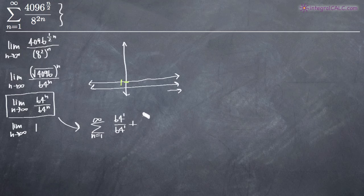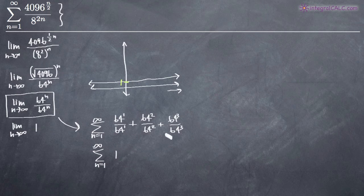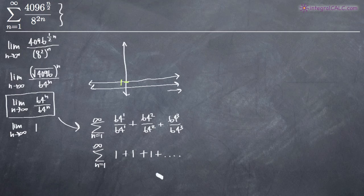When we plug in n equals 2, we get 64 squared over 64 squared. When we plug in 3, we get 64 cubed over 64 cubed. Each term equals 1: 64 to the first over 64 to the first is 1, 64 squared over 64 squared is 1, 64 cubed over 64 cubed is 1. So we're getting 1 plus 1 plus 1 plus 1 forever, which means the sum of the series is equal to infinity.